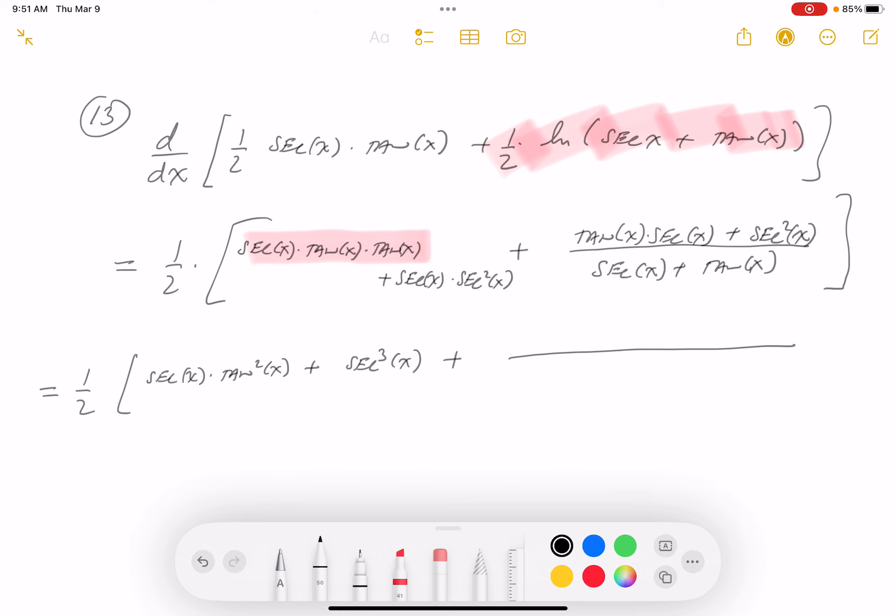I see secant comes out, right? And what are you left with? Be careful. You're left with tangent x plus secant x.